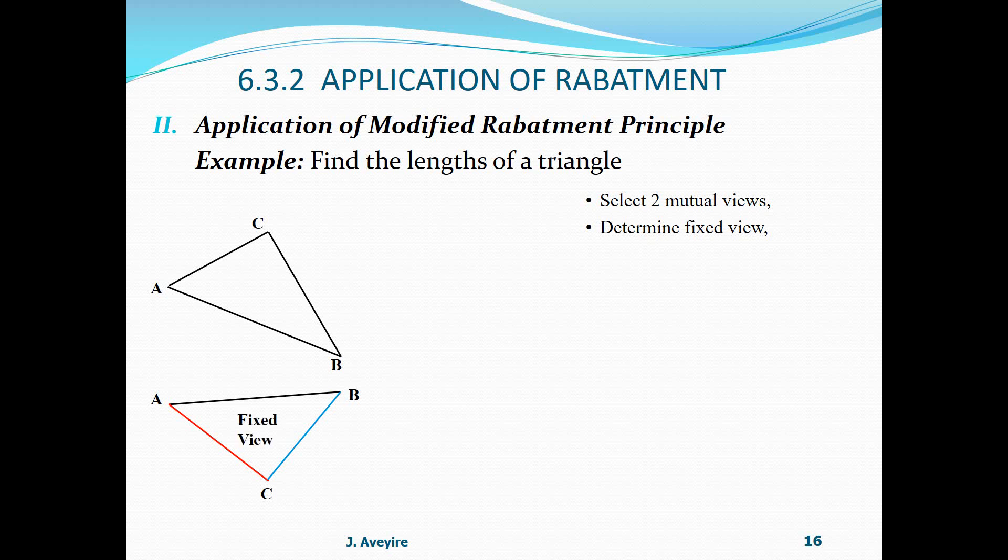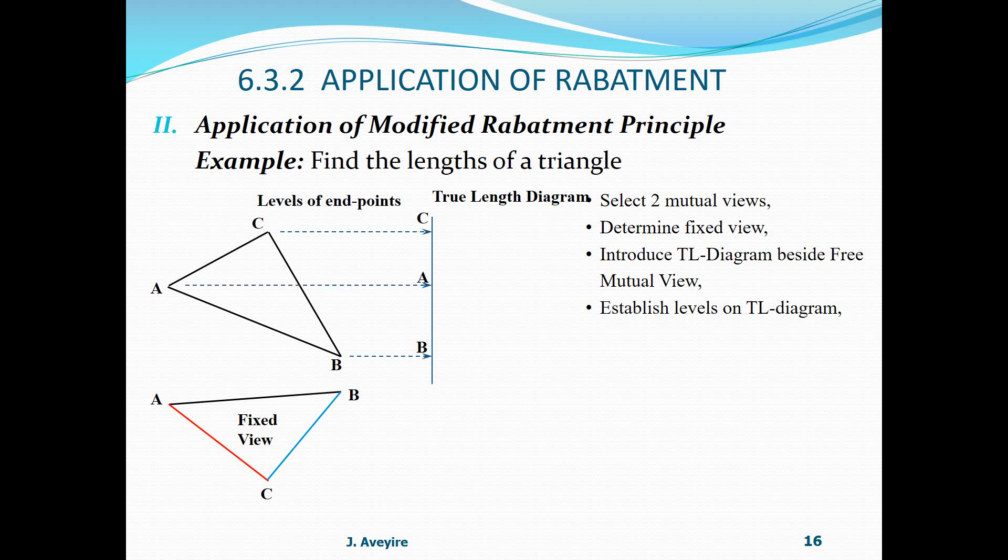Then introduce TL, that is true length diagram, a vertical line to get levels. Then establish levels on TL diagram, so levels of the three points A, B, C, levels of endpoints C, A, B. Then take lengths BC from the fixed view.